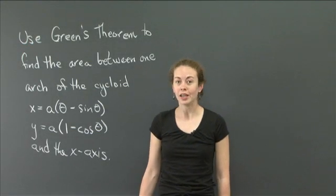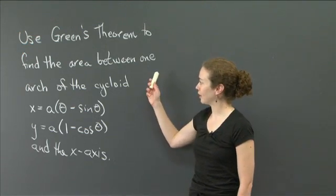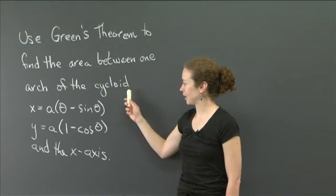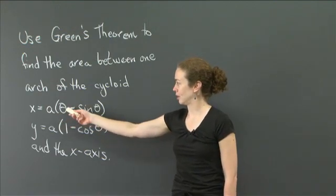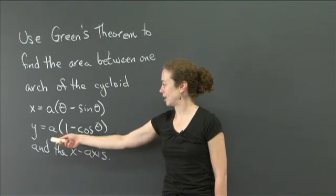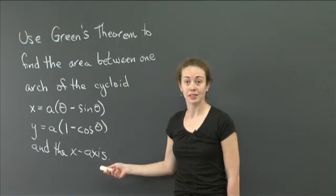Welcome back to recitation. In this video, what I'd like you to do is use Green's theorem to find the area between one arch of the cycloid that is described by x = a(θ - sin θ), y = a(1 - cos θ), and the x-axis.